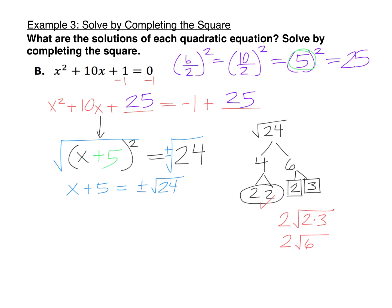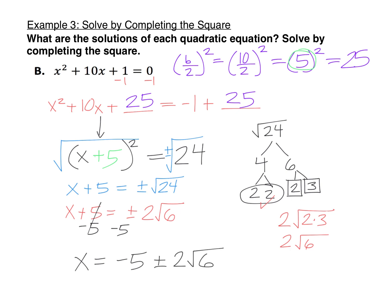So we have x plus 5 equals plus or minus 2 root 6. Now we're one step away — just subtract 5 on each side to get x alone, giving us a final answer of x equals negative 5 plus or minus 2 times the square root of 6. Remember, 2 radical 6 is just the simplified form of the square root of 24. If your radical can be reduced, you want to reduce it either by making a factor tree like I did here, or by using the perfect squares method — I'll show one later with the perfect squares method.